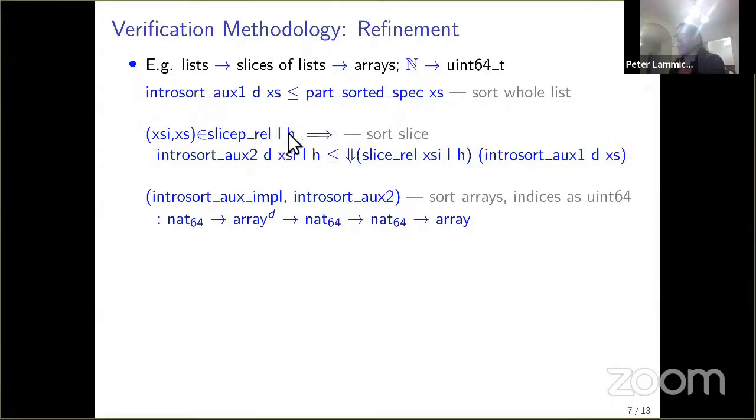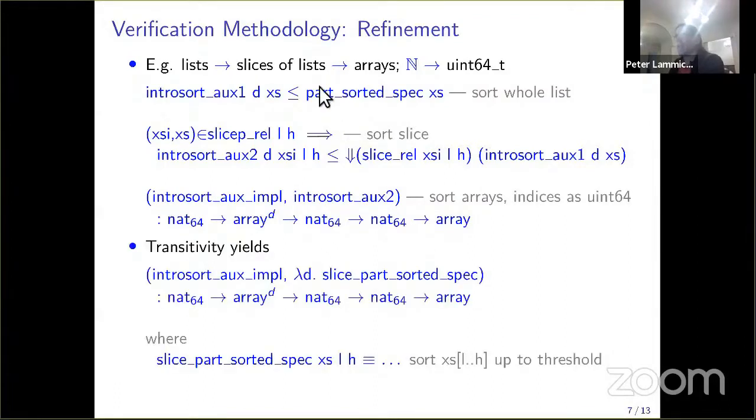Finally, we take this algorithm and replace the lists by arrays. The indices, which are natural numbers, are replaced by 64-bit integers. This is a proof done mostly automatically by a tool of the refinement framework. Once we have done all these steps, by transitivity, we get that our implementation implements the specification.